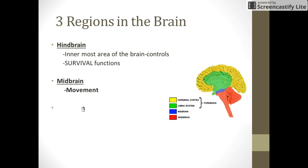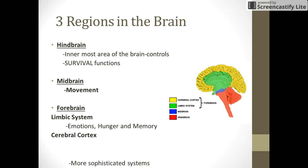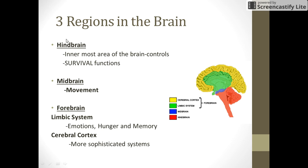There are three different brain areas that you need to know. The first one is the hindbrain — it's the innermost area of the brain, and it controls our survival functions. That's the focus of this video. If you look at the diagram, the red area is the hindbrain. You might want to draw this image in your notes and label it.